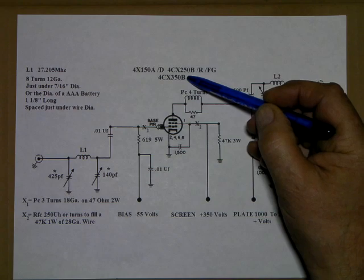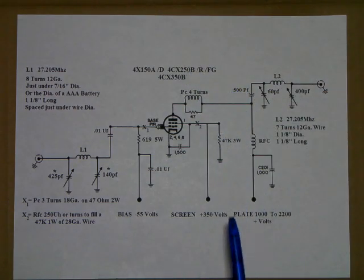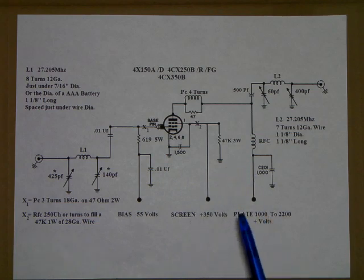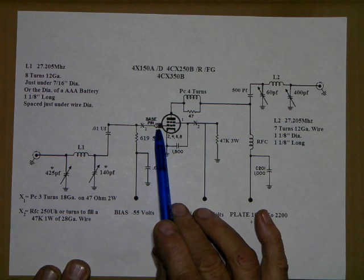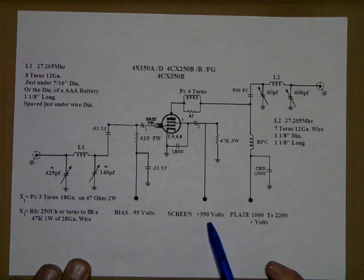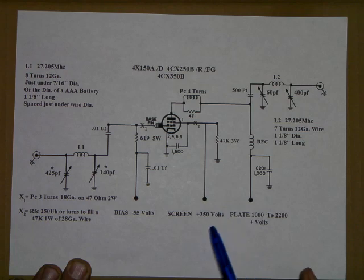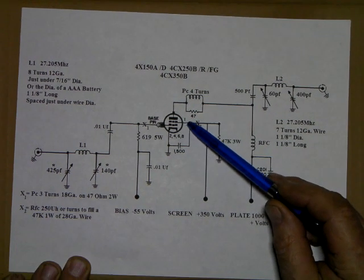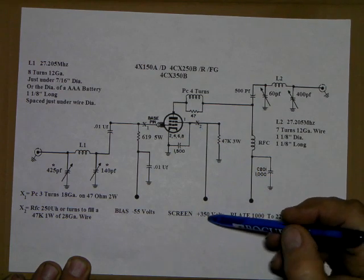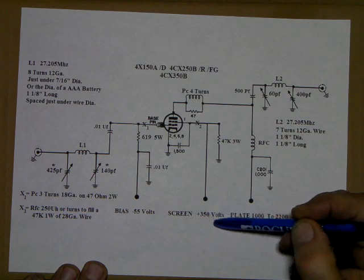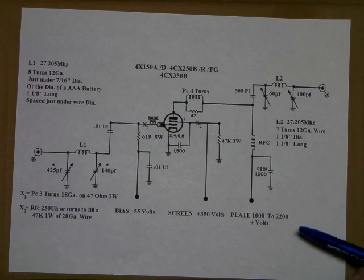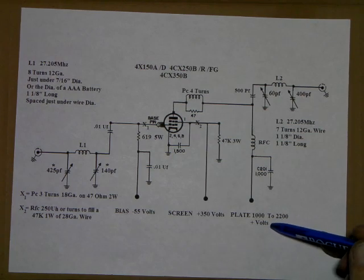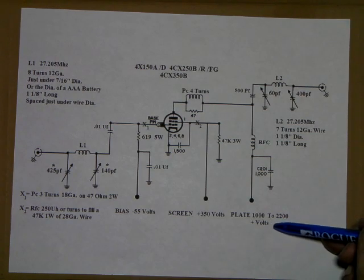The other voltages you're going to need are bias, that's a negative voltage for the grid. You're going to need screen voltage, about 350 volts at about five to ten milliamps. This voltage is also what we control the output of the tube with.